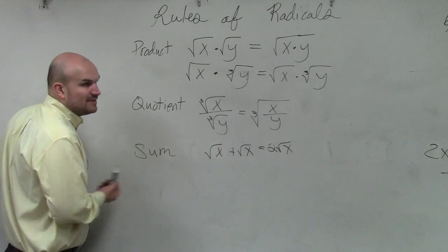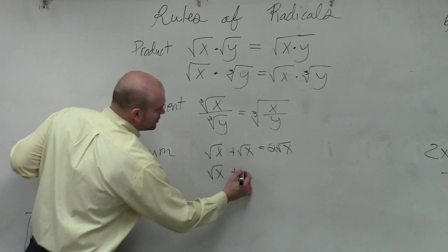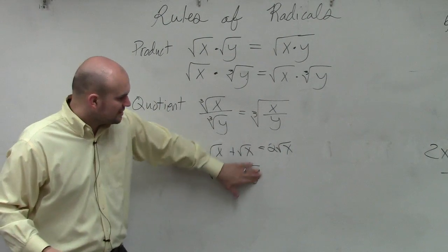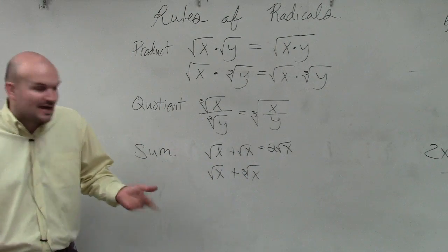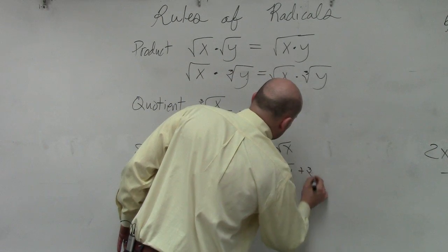And then again, the same thing. Here comes the misconceptions. The square root of x plus the cube root of y. Guys, or actually, let's just use x again. If the roots are not the same, you cannot add them together. So that just becomes the square root of x plus the cube root of x.